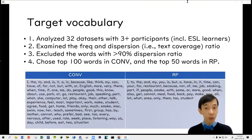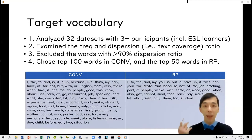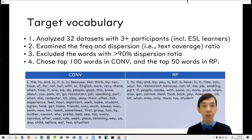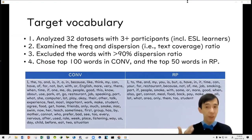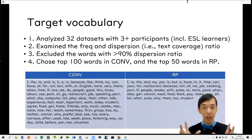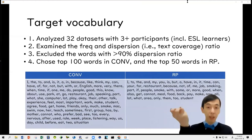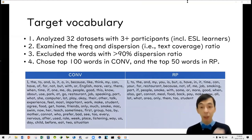To design the target vocabulary, we first analyzed 32 datasets with three or more participants including ESL regions, and examined frequency and dispersion ratio. We excluded words with lower than 90% dispersion ratio. We chose the top 100 words from the conversation task and the top 50 words from the role play task, since the conversation data is more than double the size of the role play data.